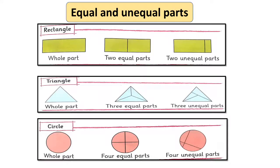Look at the circles. The first one is a complete circle. Next has four parts which are equal and in the last circle it has four unequal parts.